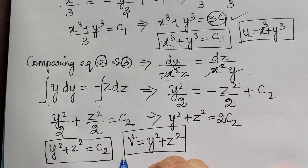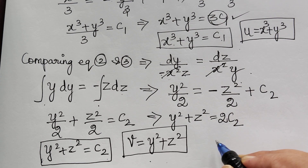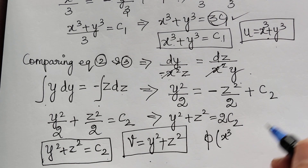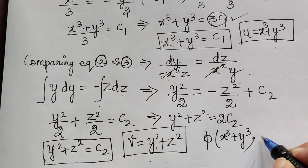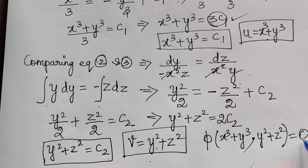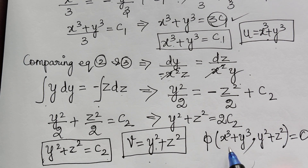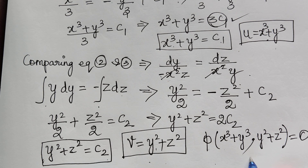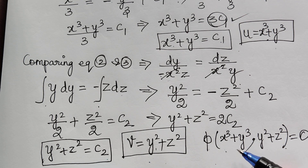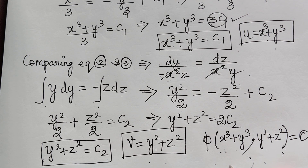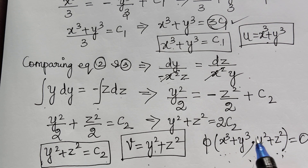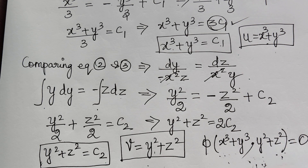We have now obtained both solutions u and v. The general solution is φ(u, v) = 0, which gives φ(x³ + y³, y² + z²) = 0. If you compare equations 2 and 3 first, you get φ(y² + z², x³ + y³) = 0, which is equally correct. Any valid pairing of equations gives a correct solution, so do not worry if your form differs slightly.